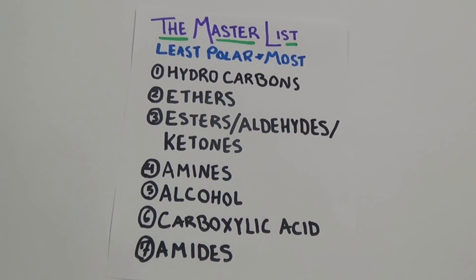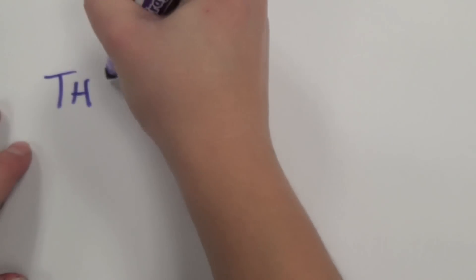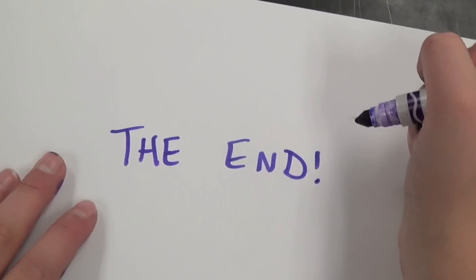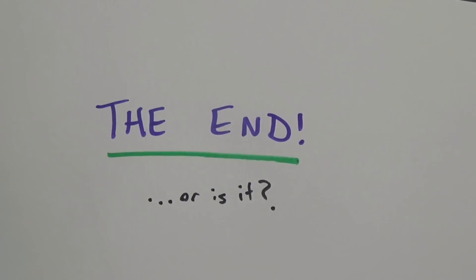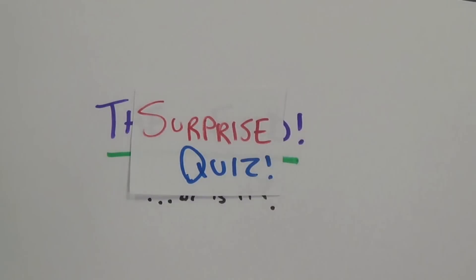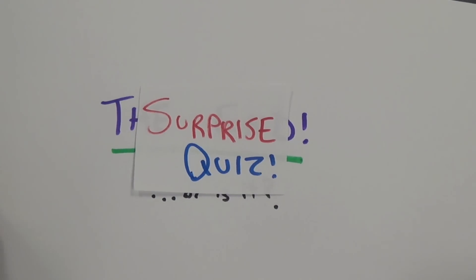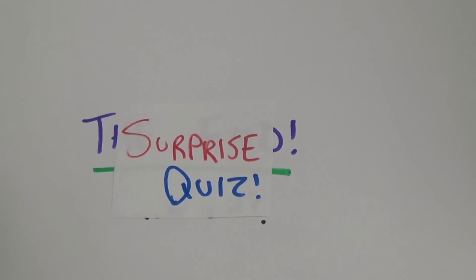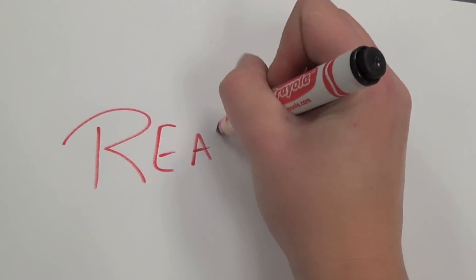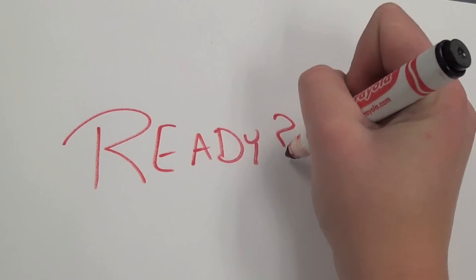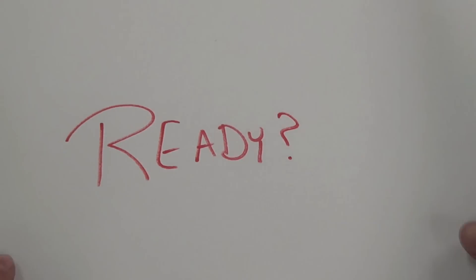So concluding that thorough examination of our master list — I suppose this must be the end. Or is it? Surprise quiz! Place the following seven molecules on the blank master list in order of increasing polarity, one being the least polar and seven being the most. Ready and go!